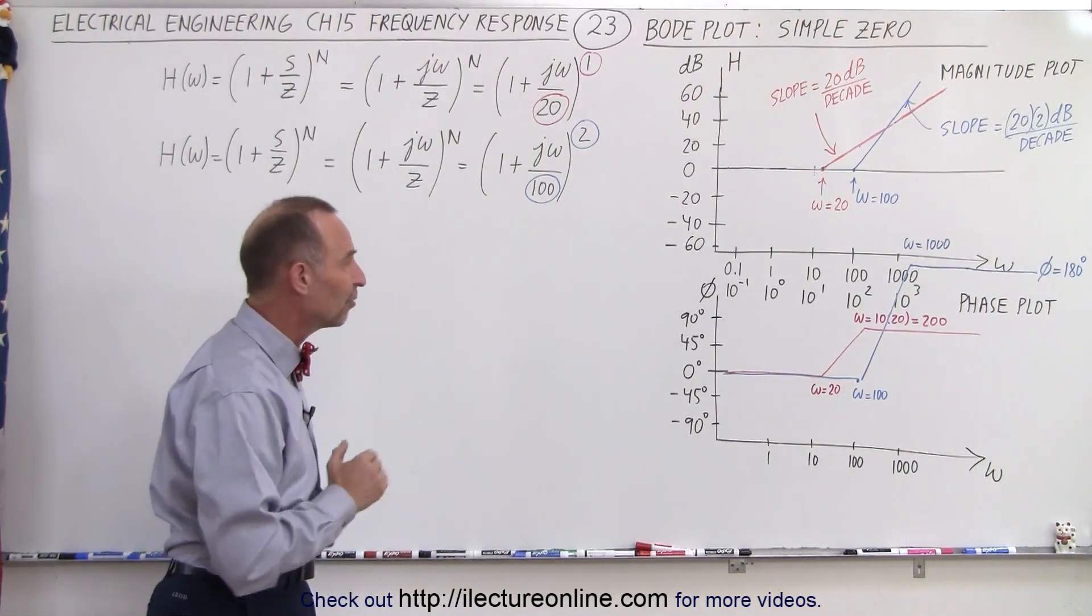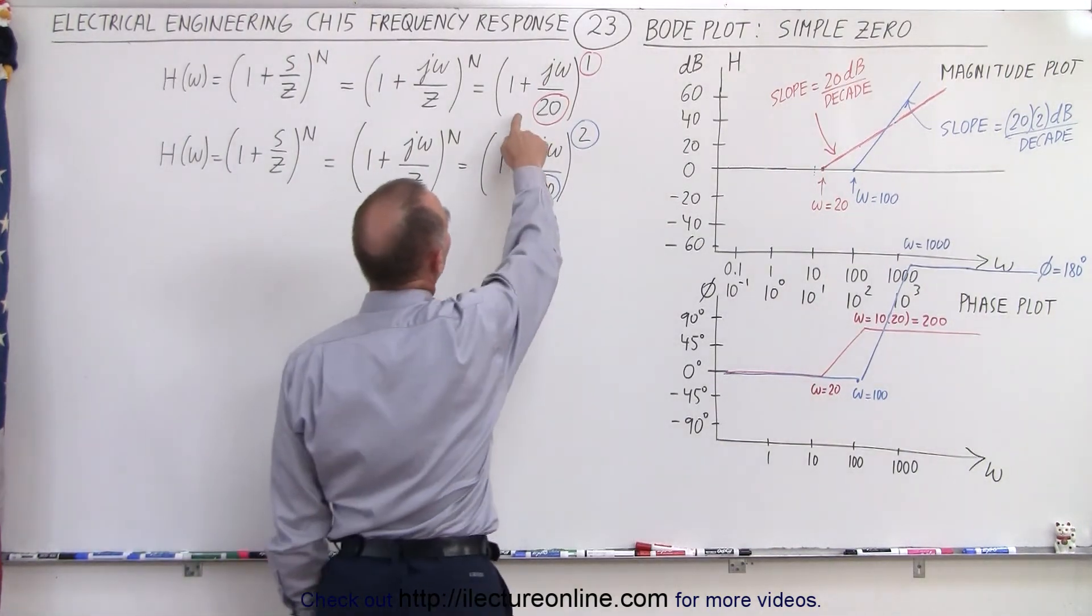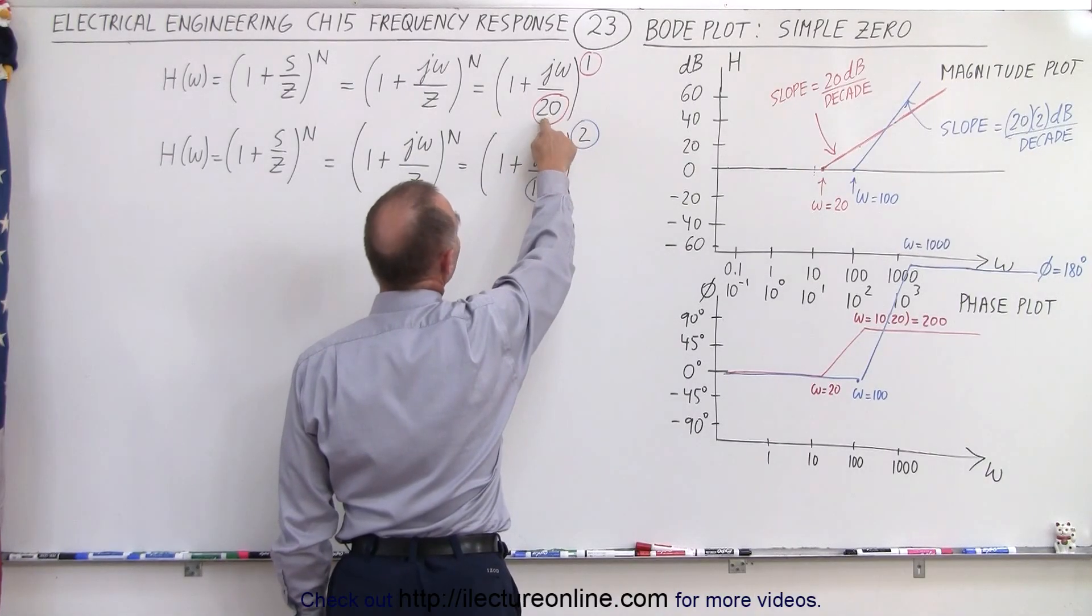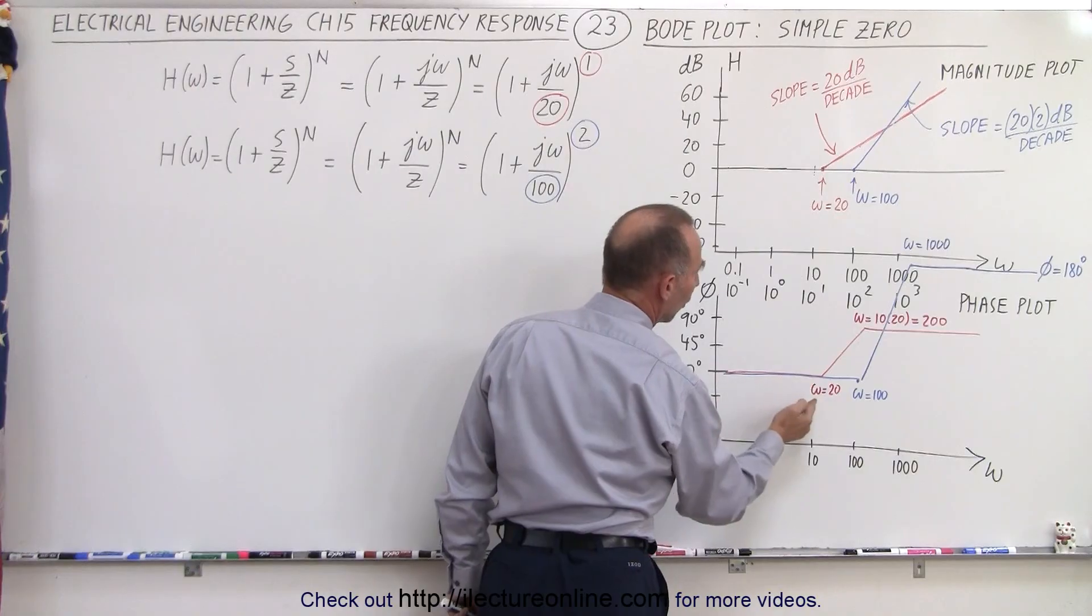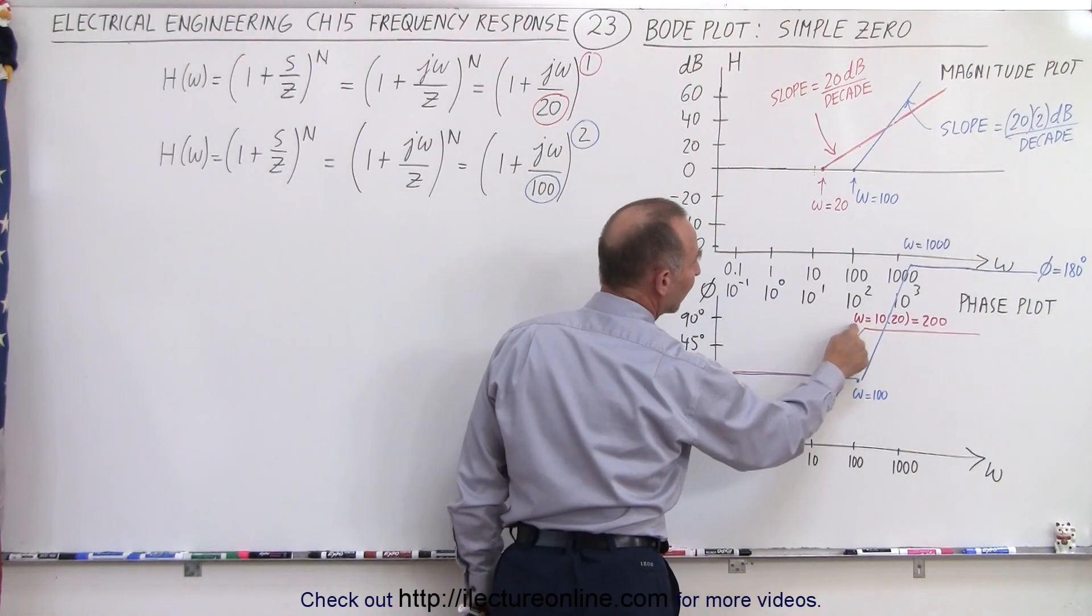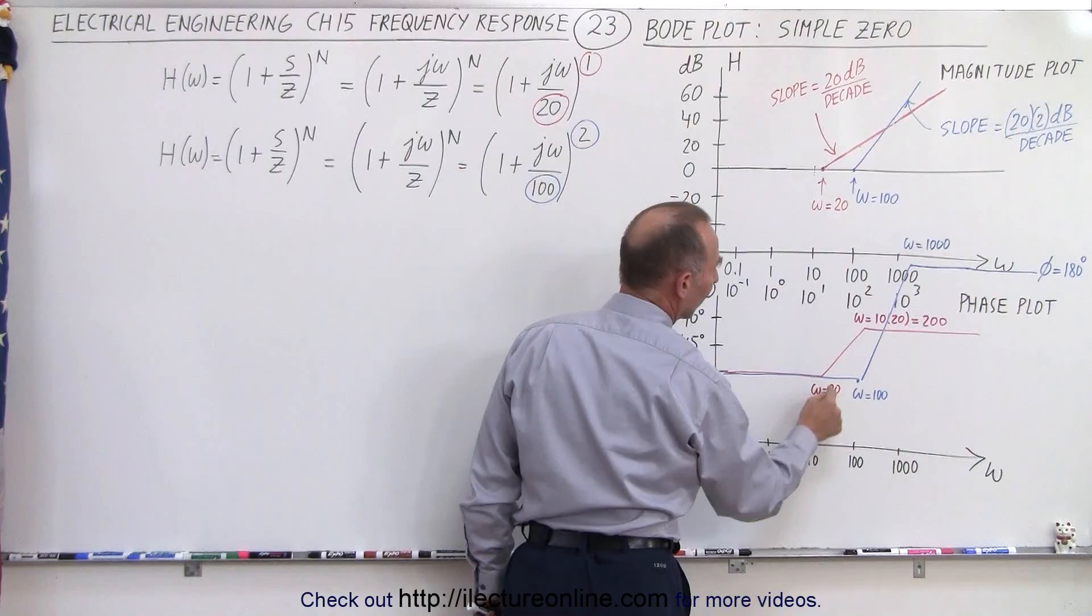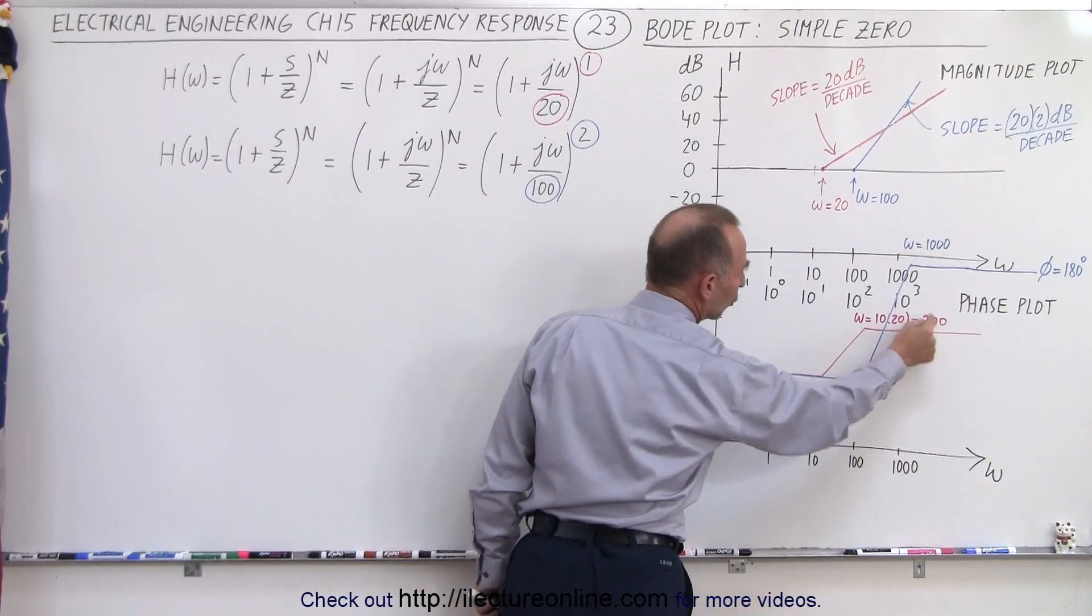So now let's take a look at the phase plot for the simple zero, where we start at omega equals 20. Notice then the phase goes from zero all the way to 90 degrees by the time omega is 10 times the value of omega being 20, or 200.